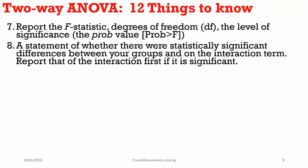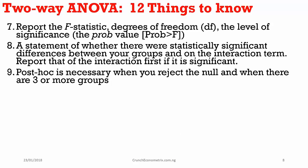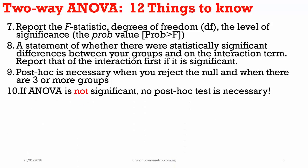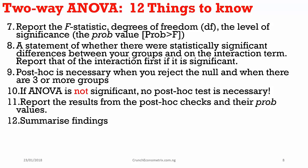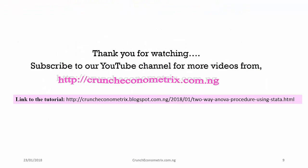Also report the P-values and include a statement on whether there is a statistically significant relationship between the groups. If your interaction term is significant, always report it first. Post hoc analysis is necessary when you reject the null hypothesis and have more than two groups in a category. If ANOVA is not significant, there is no need for a post hoc test. Report the results from the post hoc analysis along with their probability values. Always remember to summarize your findings.